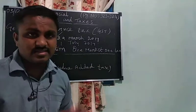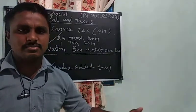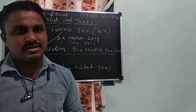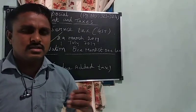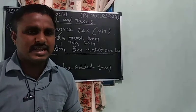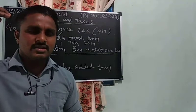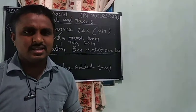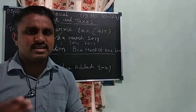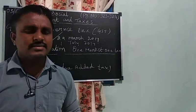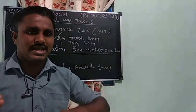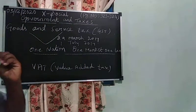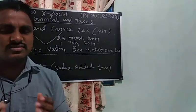This tax is collected by three types of government: Union government, state government, and local government. For example, income tax is collected by the central government. Electricity or lottery taxes are collected by the state government. When both state and central collect together, it is called Integrated Goods and Service Tax — IGST.